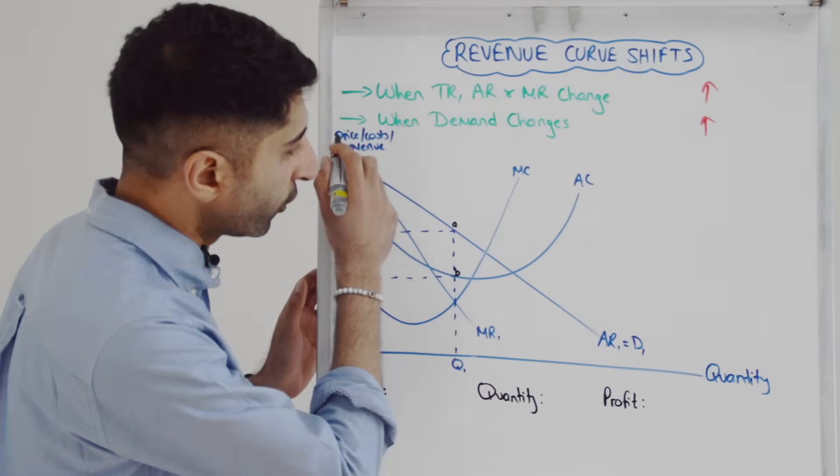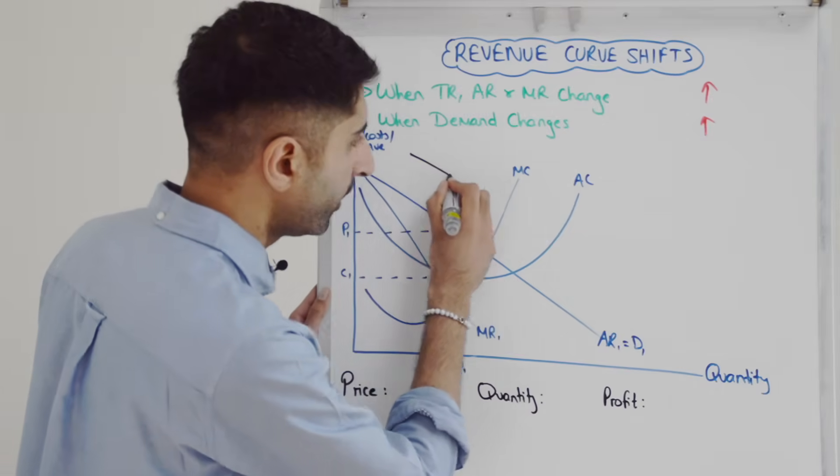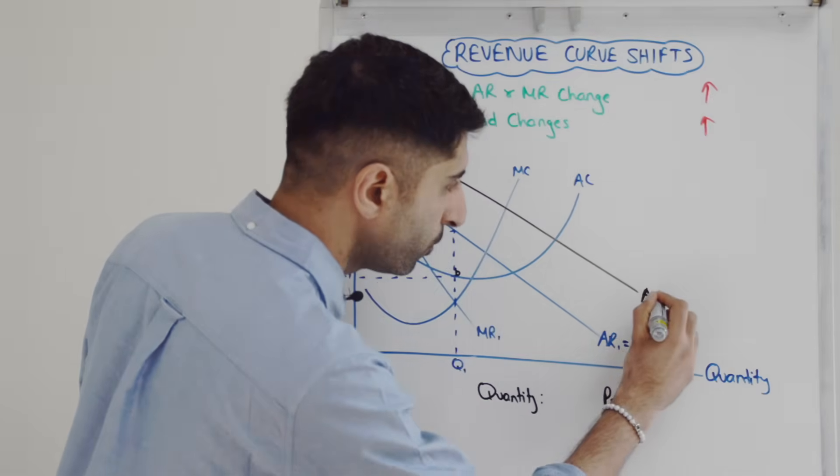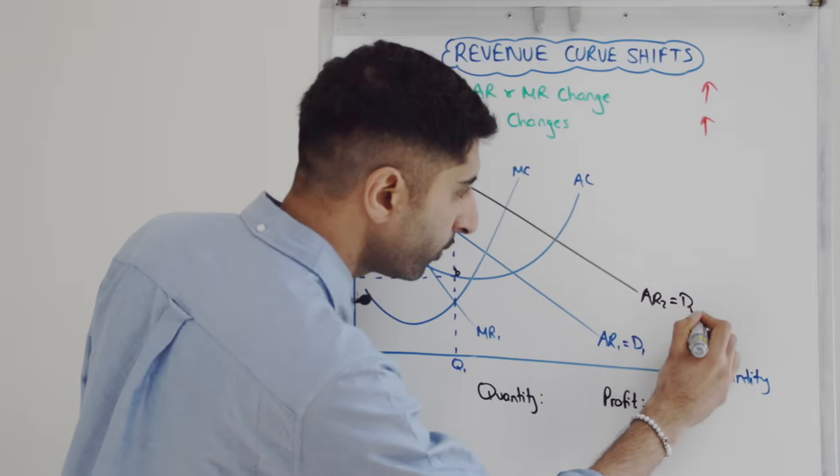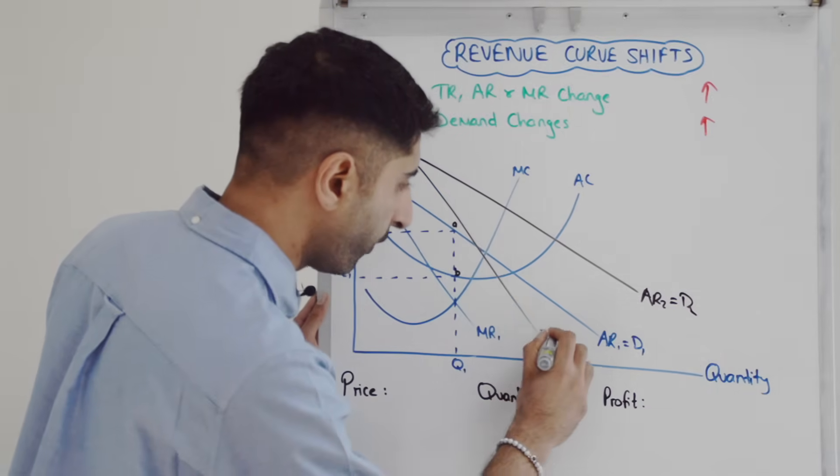Here we go with the shifts. So shifting AR and then MR. AR first, a nice big shift. Let's call that AR2, which is now D2. MR is twice as steep, so MR twice as steep, call that MR2.